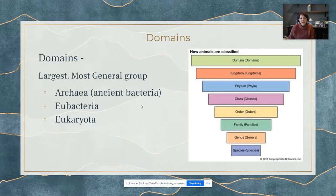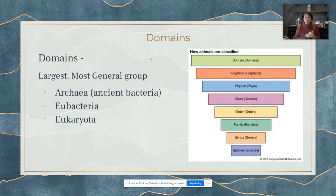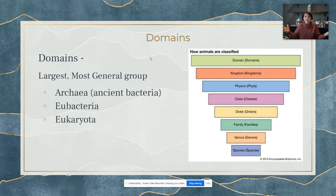At the top there are domains, which are the largest and most broad groups of organisms. There are only three domains. The first is Archaea, which are ancient bacteria. The second is Eubacteria, a different type of bacteria. So the first two domains are just bacteria. The last domain, Eukarya, encompasses everything else — plants, animals, fungi, and protists. As you can imagine, it doesn't get very specific up in the domain categories.